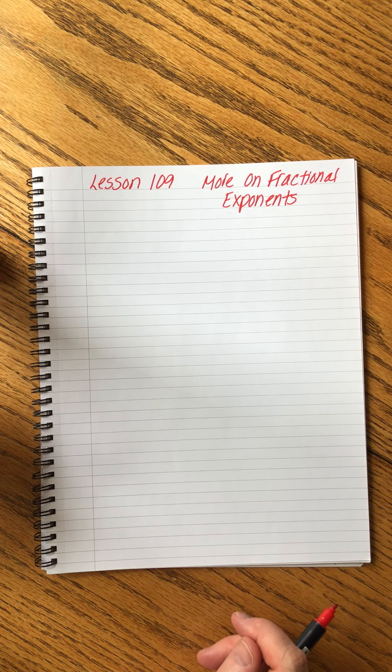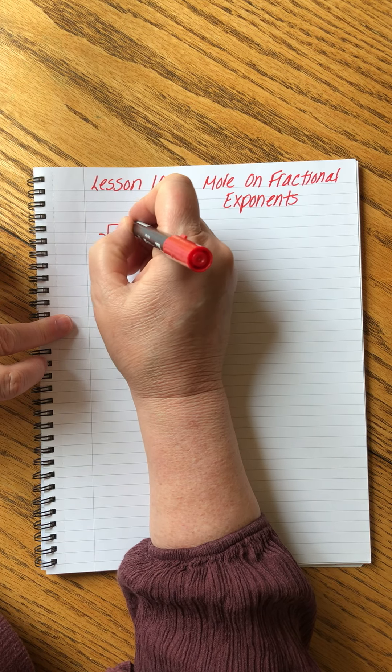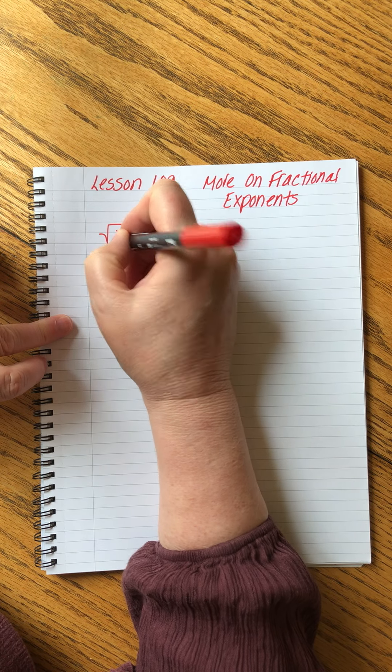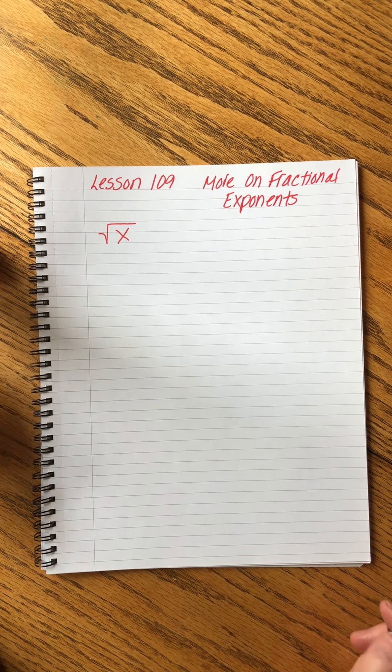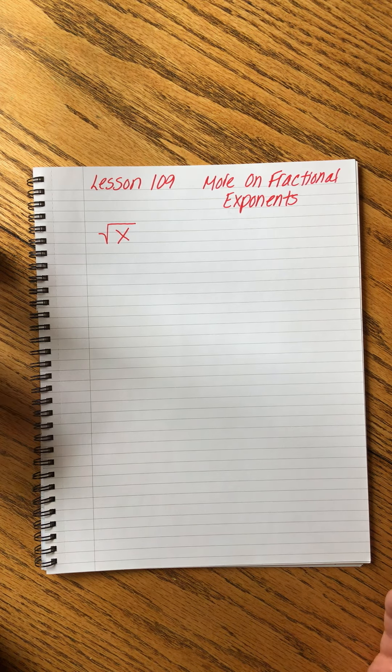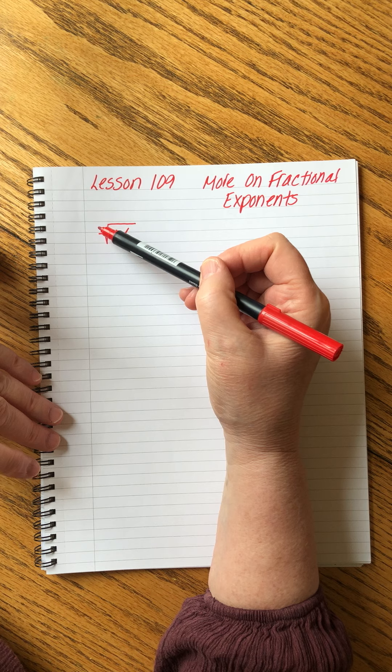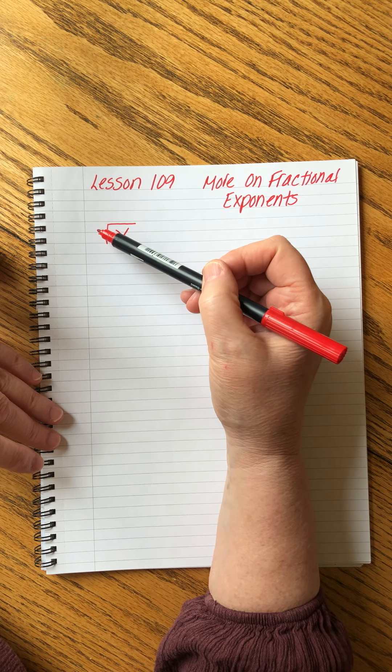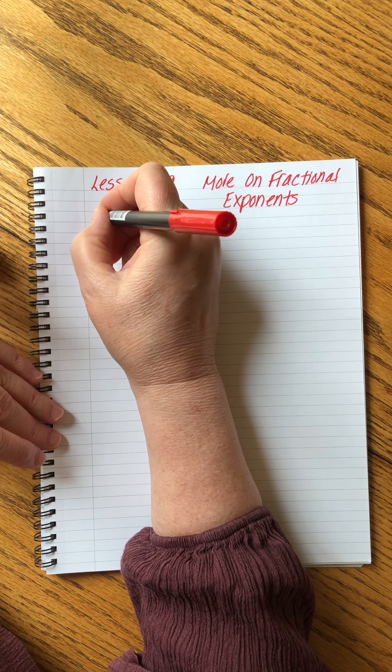Pig houses are a fact of life in high school algebra. We have things like this. We see them all the time, right? We call them radical signs. I mean, I call them pig houses, but they're supposed to be called radical signs. And they sometimes have a number appear, sometimes don't. If they don't have a number, we know it's an invisible two, right?